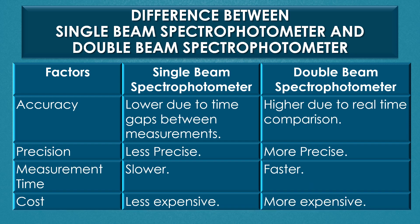Accuracy: the accuracy of a single beam spectrophotometer is lower due to time gaps between the measurements, but in a double beam spectrophotometer, the accuracy is higher due to real-time comparison. Precision: the single beam spectrophotometer is less precise in nature, but the double beam spectrophotometer is more precise in nature.